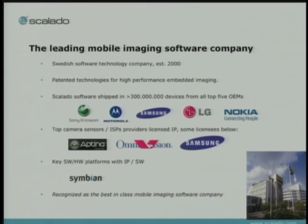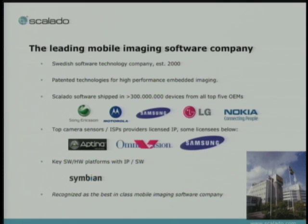Just a couple of words about Scalado. We are a nine-year-old company established in the year 2000. We have patented technologies for high-performance embedded imaging on mobile phones. We have shipped in more than 300 million devices from all the top-tier manufacturers. We have included this SpeedTags technology in most of the major hardware players, including Aptina, OmniVision, Samsung, Sony, and others. The sensors range from 3 to 12 megapixels with this technology embedded. We are also present in platforms like Symbian and more, and I would say we are recognized as the leading imaging company in the world.